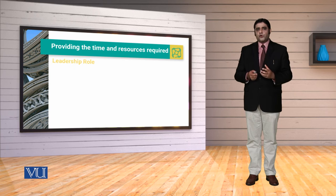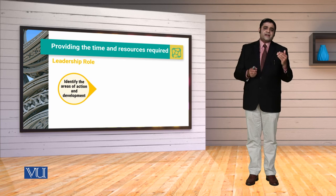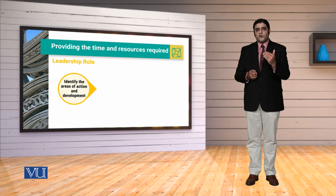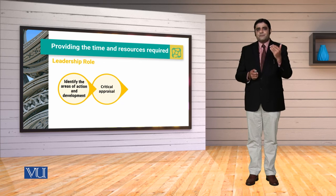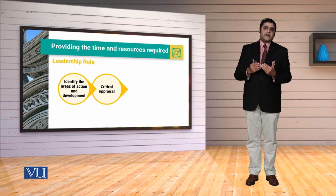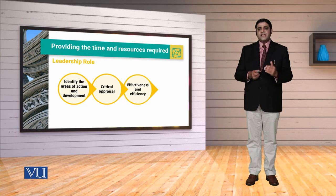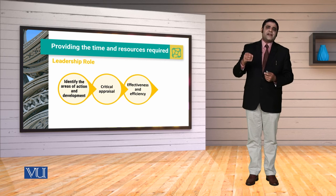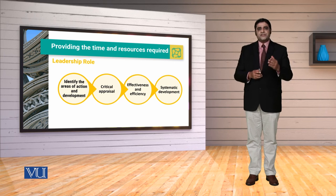The third aspect is that we will identify the areas of action and development. The leader identifies where there are gaps and where improvement is needed. The fourth important point is that when we talk about time and resources, we have to do things systematically — there is a sequence, a logical explanation, and rationality involved.